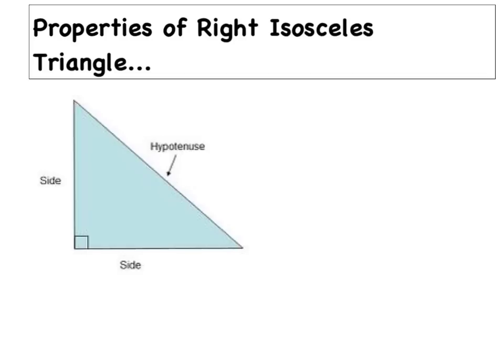Not to be outdone by the equilateral triangle, we're now going to look at the right isosceles triangle and review some basic properties. There are two scenarios. In the first, it's laying on one of its legs — that leg is the base. The beautiful thing about isosceles is that whatever the base equals, the height equals exactly the same thing. They're congruent because it's isosceles.